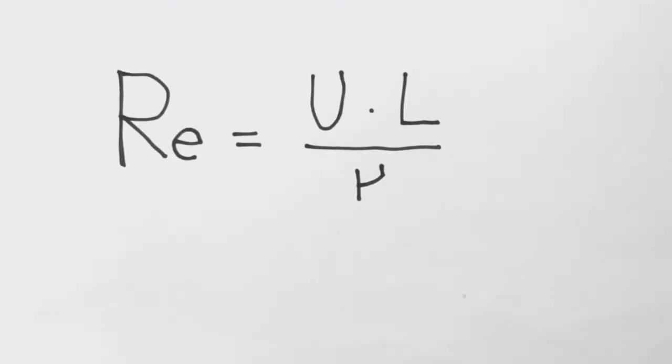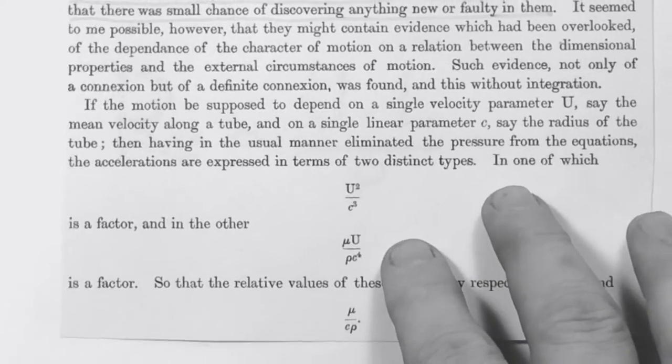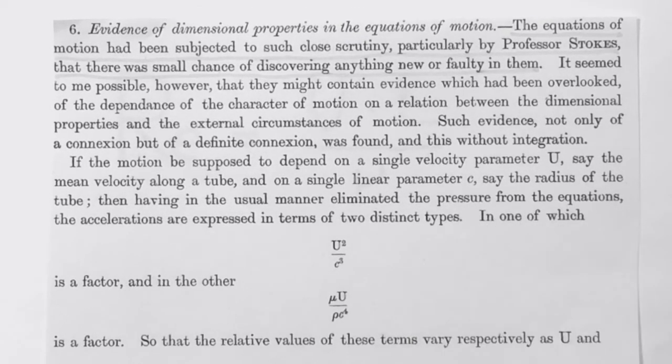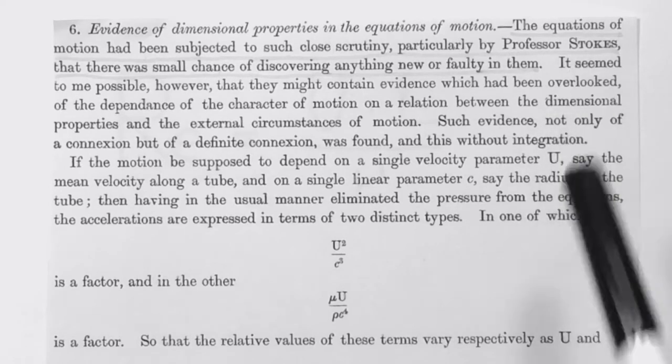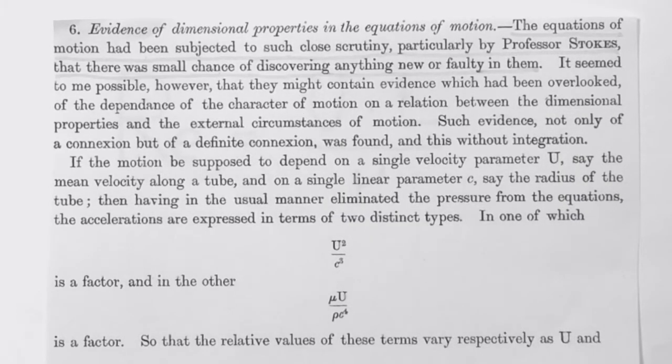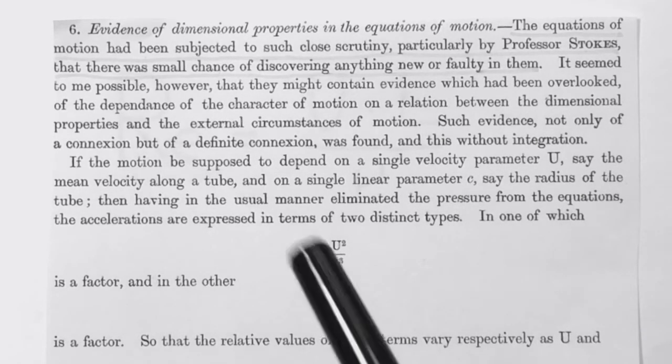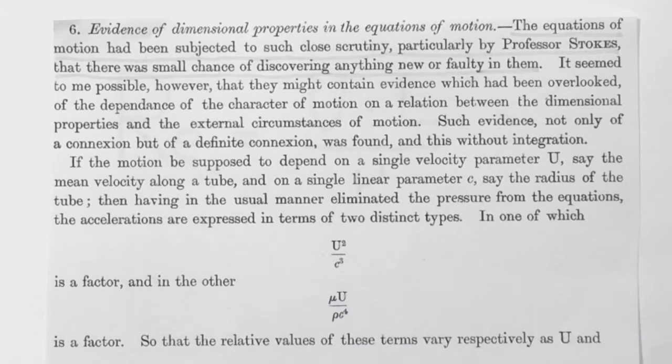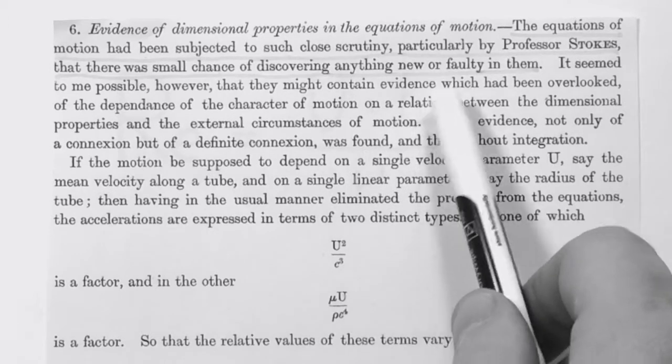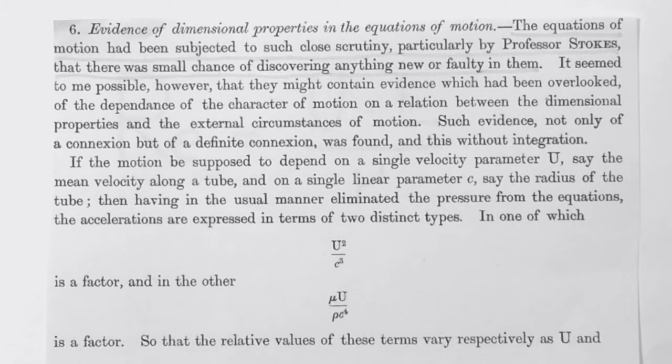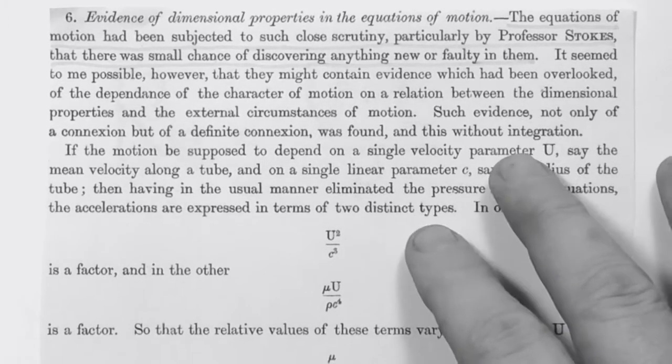Let's see what Reynolds was actually saying in that paper. This is one sentence quite interesting: The equation of motion had been subjected to such close scrutiny, particularly by Professor Stokes, that there was small chance of discovering anything new or faulty in them. This is quite interesting, and the two keywords are new and faulty, considering how much research has been done since then.